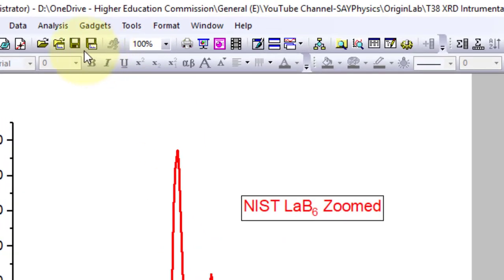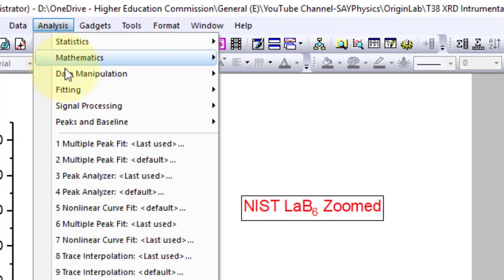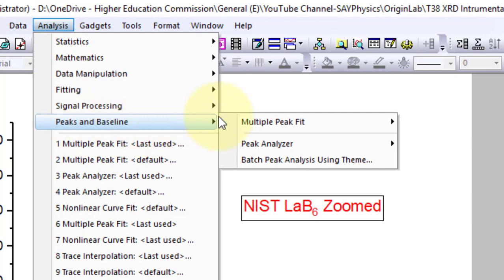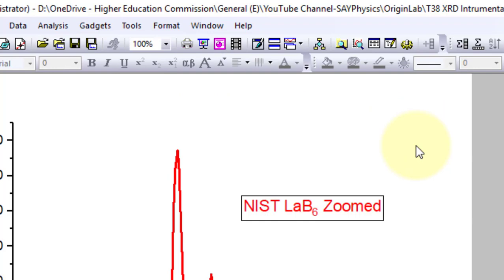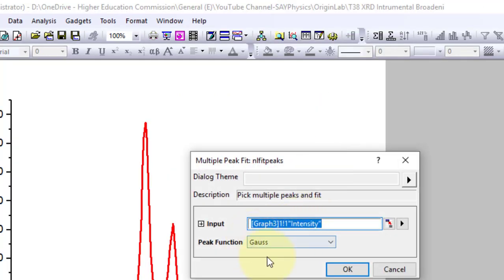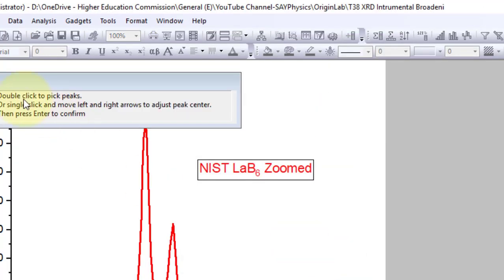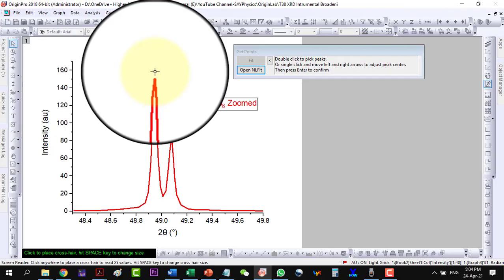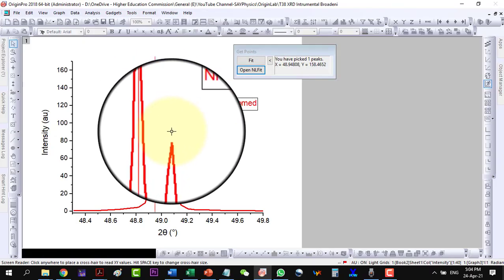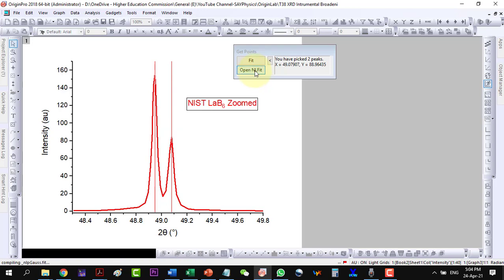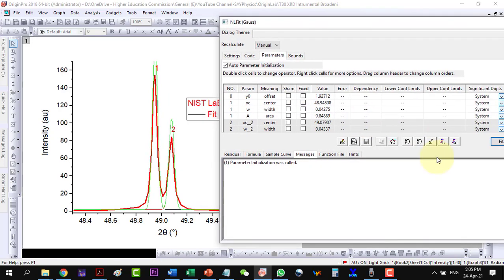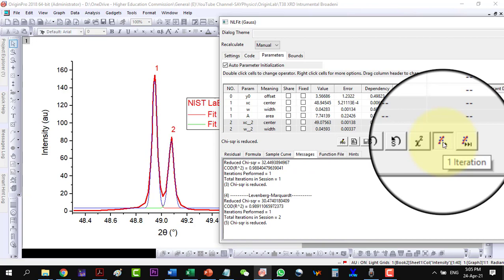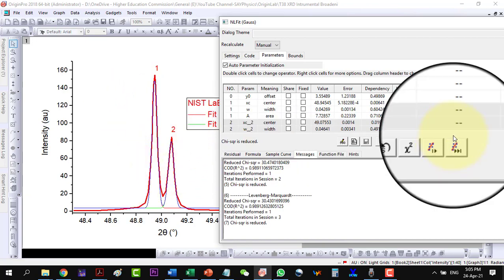To find its FWHM, go to Analysis, Peaks and Baseline, Multiple Peak Fit and Open Dialog. Go on with the Gaussian function. Double click to pick the peaks. Open non-linear fit. Click few iterations to see that fitting is good. Then fit until converge.